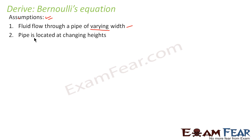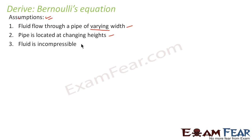The second assumption is the pipe is located at changing heights. That means the height of each cross-sectional area of the pipe is not the same. The third assumption is that the fluid is incompressible.